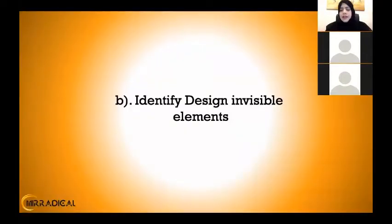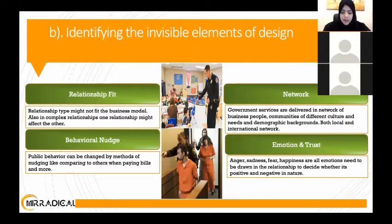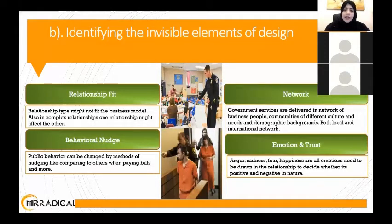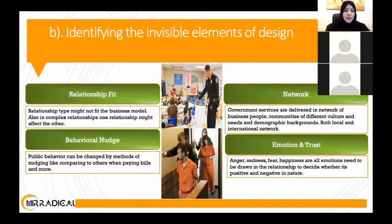When designing in government, there are important invisible elements to identify. In government relationship redesign, there are invisible relationships — the social contract. As a resident or citizen, I have a contract with the government to deliver excellent service on my behalf. There are different networks, emotions, and trust between parties, different behaviors depending on context — whether dealing with a convict or a child — negative and positive emotions, and indirect customer relationships.